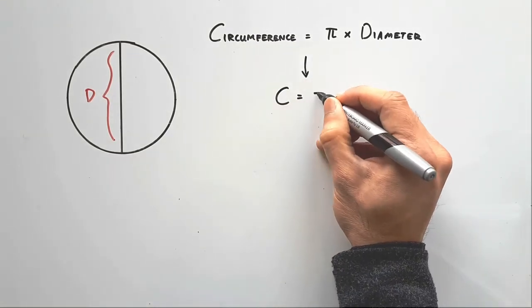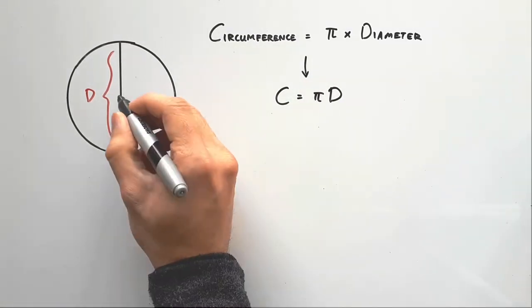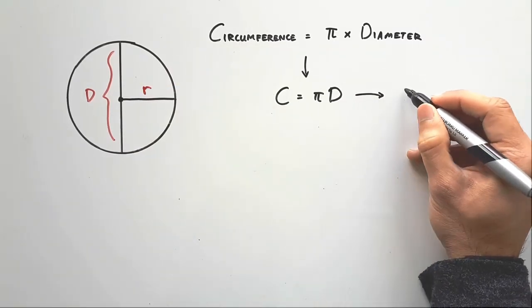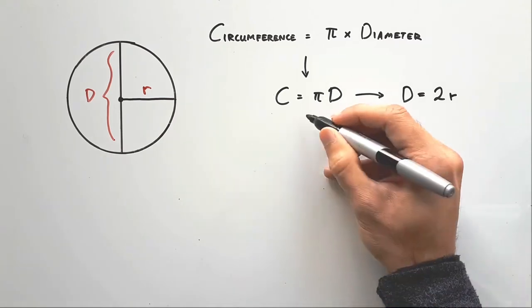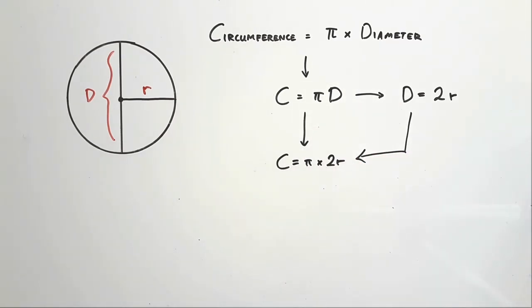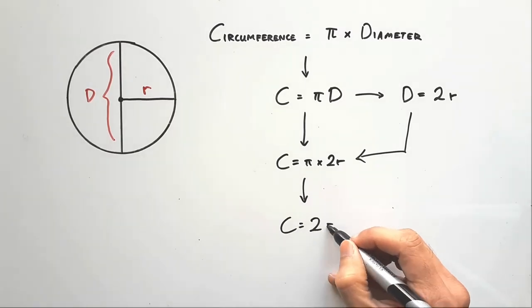So the formula is pi times d. But we usually use radius to work this out, and diameter is always double the radius. So we can rewrite the formula as pi times 2r, more commonly written as 2πr.